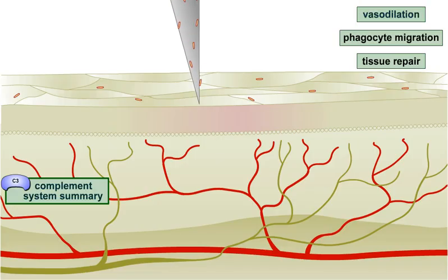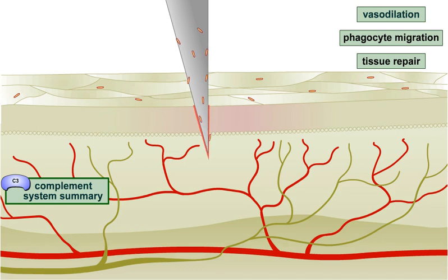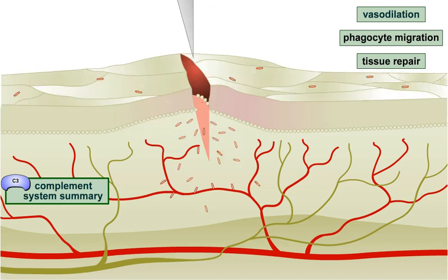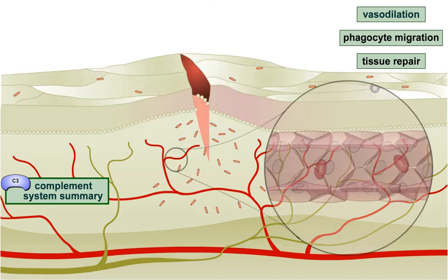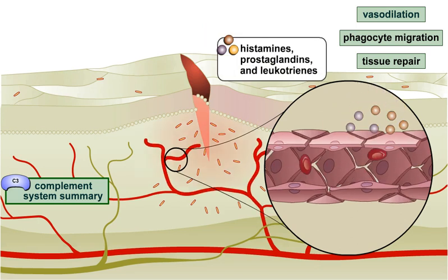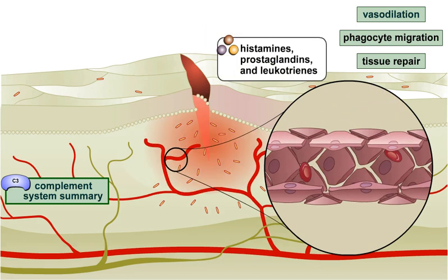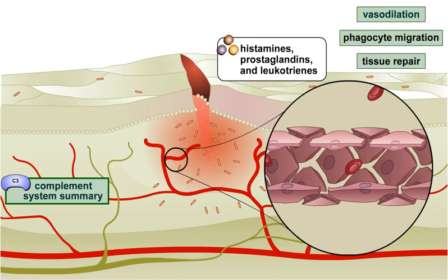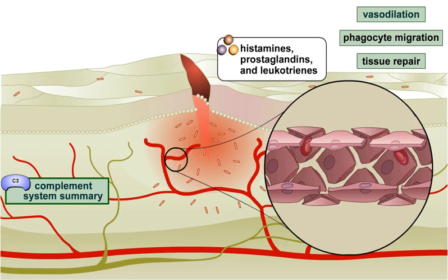Damaged cells release several chemicals, such as histamines, prostaglandins, and leukotrienes. Certain components of the complement system can also stimulate the release of histamines. One function of these chemicals is to cause vasodilation, an increase in the diameter of blood vessels.